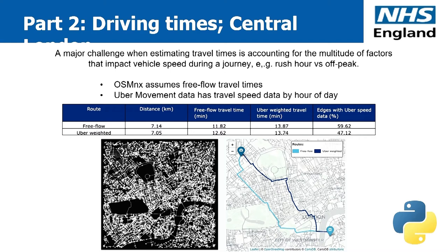Whilst OSMnx is a really useful package, it does assume free-flow travel times and you have to fix the speed at which you travel through a city. In major cities such as London, free-flow speed is rarely achieved, especially during rush hour. In this section of the project, Matea explored combining Uber movement data with OSMnx to estimate travel times between a GP practice in St John's Wood and St Thomas' Hospital. The left picture shows a rendering in OSMnx of nodes and edges for central London, and on the right the Uber movement data is overlaid both for free flow and for peak rush hour, with a table giving the calculated travel times.